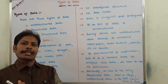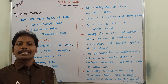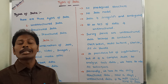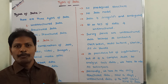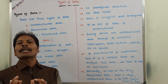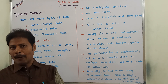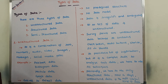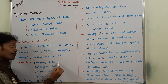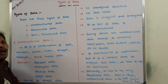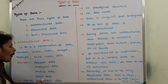We can see how much data is generated within one hour throughout the world. Among them, most of the data is unstructured data. Examples for unstructured data: Facebook data, Instagram data, YouTube data, Google data — these are all unstructured data.